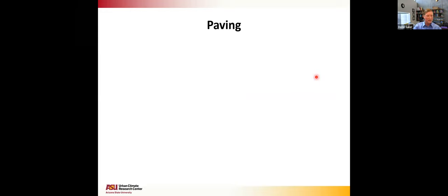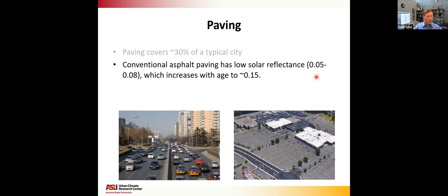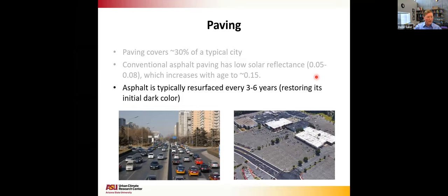Let's look at paving. A typical city is covered by about 30% paving. Conventional asphalt starts out with a very low solar reflectance — reflecting only about 5–8% of solar energy, absorbing the rest. As paving ages, some aggregate shows more and reflectance increases to around 12–15%. However, due to maintenance requirements, we have to routinely resurface asphalt streets every three to six years, which restores it to its initial very dark, very hot surface.